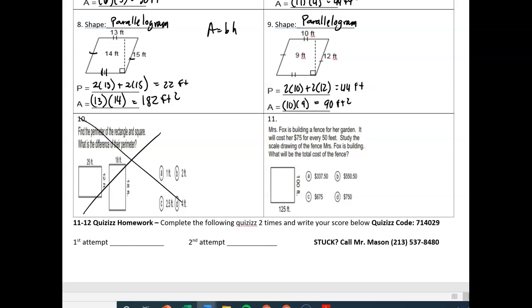But I would like you to do number 11 here. It says Mrs. Fox is building a fence for her garden. Fence right away should let you know that you are probably working with perimeter. It says it will cost her $75 for every 50 feet. Study the scale drawing of the fence Mrs. Fox is building, and what will be her total cost. First of all, we're working with perimeter. So our perimeter in this case is going to be 2 times 125 plus 2 times 100. When I add that all up, I get 450 feet. But you'll notice that isn't even an answer choice. So you might be saying, wait a second, Mr. Mason, how do I figure this out?